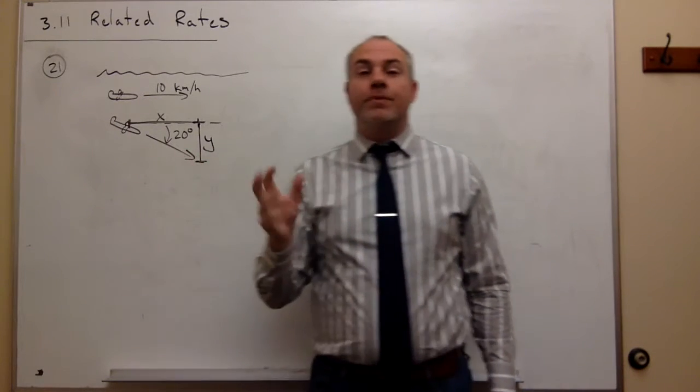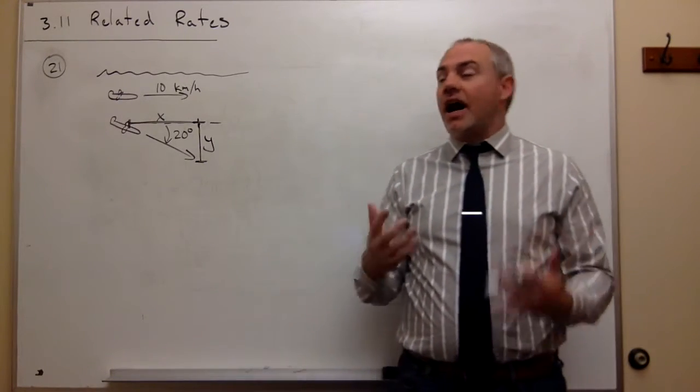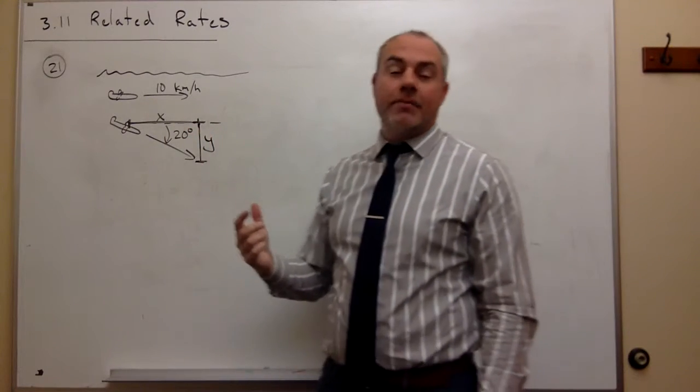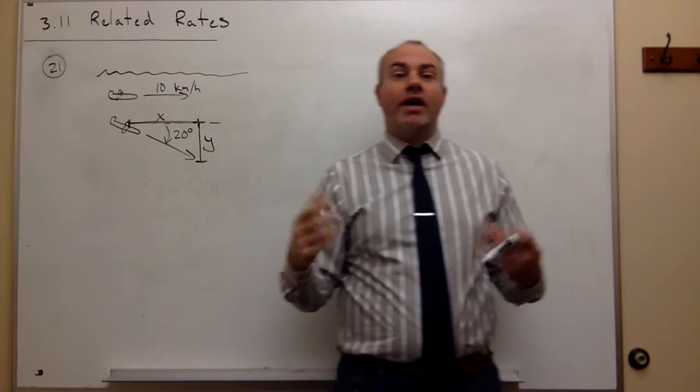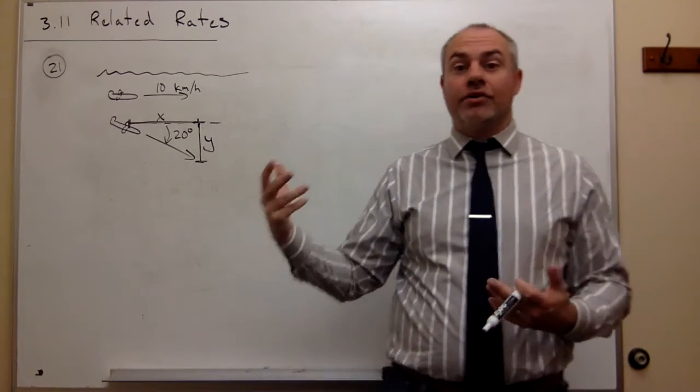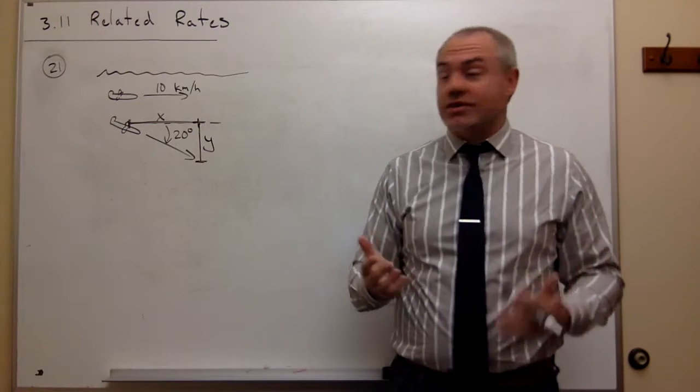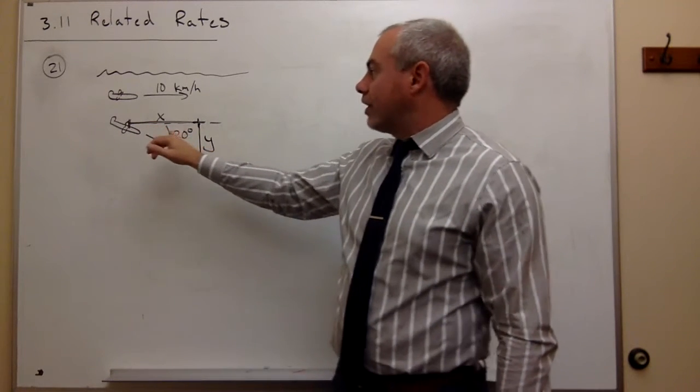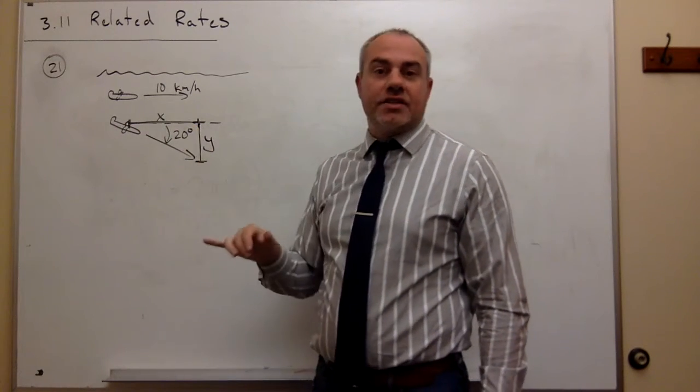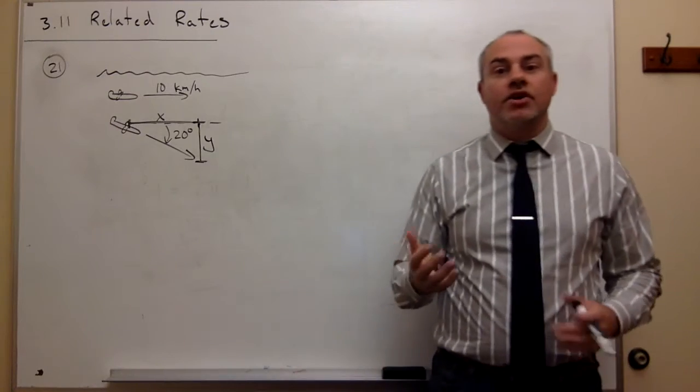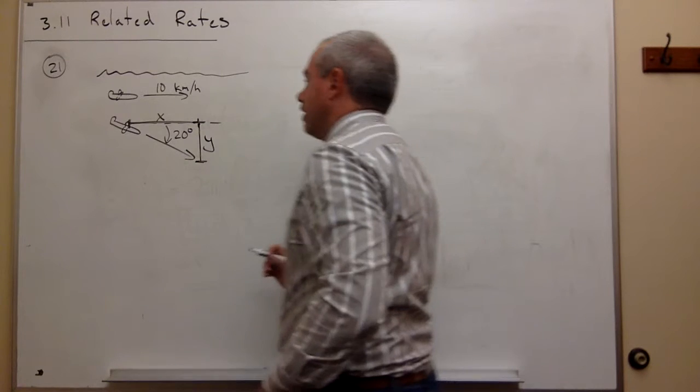Those are the two pieces that are changing in this problem. Now I need a formula that ties those two pieces together. This 20 degree angle is a big deal, so what kind of formulas tie angles to two sides of a triangle? Trig functions do. What trig function ties this angle here to the opposite side and the adjacent side? Well, tangent does. So let's use tangent to put these three things into one equation.